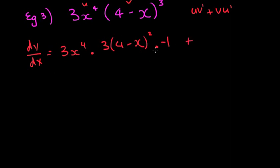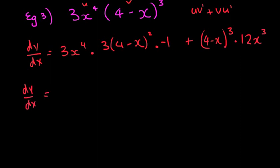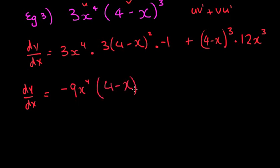That's the first bit, that's u·v'. Plus v·u': it's (4 − x)³, and then u' is 4 times 3 is 12x³. So dy/dx — what you might notice is that these brackets are the same. I'm going to simplify: negative 1 times 3 times 3x to the power of 4 gives negative 9x to the power of 4, in brackets (4 − x) all squared. Plus 12x³ times (4 − x)³.